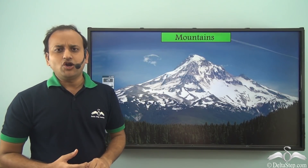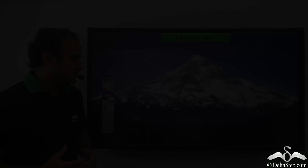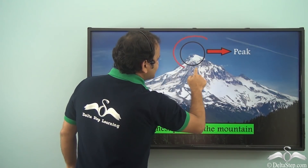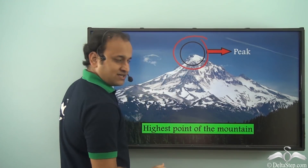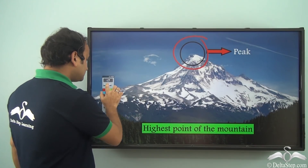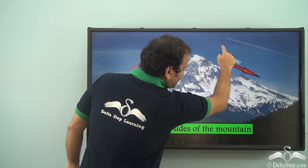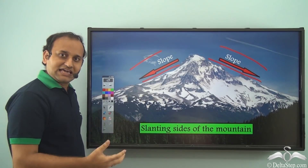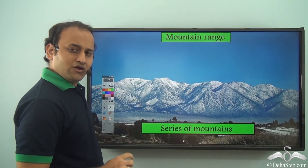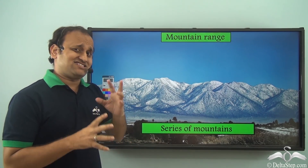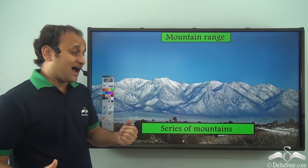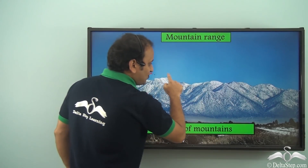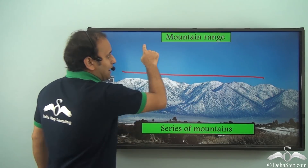These are the mountains. Mountains are very big and gigantic and they are very tall. This is the highest point of a mountain and this highest point is called a peak. Now these sides of the mountain are called the slope — they are a bit slanting and usually pretty steep. When you have a lot of mountains together, that is a series of mountains, and usually mountains are seen in a series.